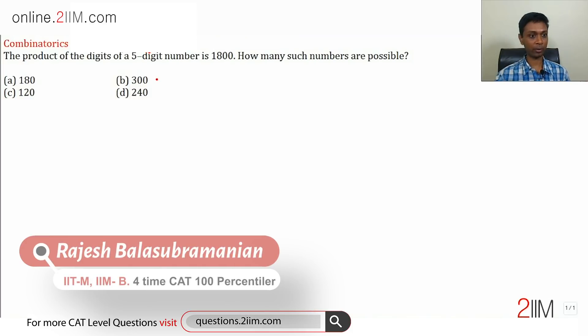Favorite question. I have too many favorite questions on this topic. The product of the digits of a 5-digit number is 1800. How many such numbers are possible?